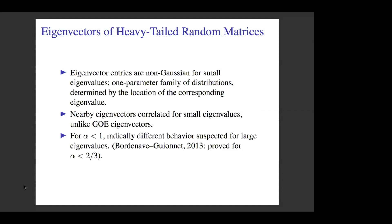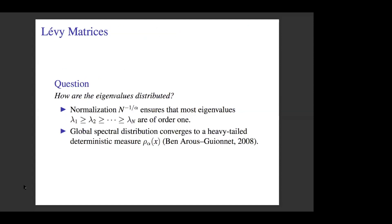This was shown rigorously by Benaych-Georges and Knowles when alpha is less than two. When alpha is greater than two, you're in the finite variance case.